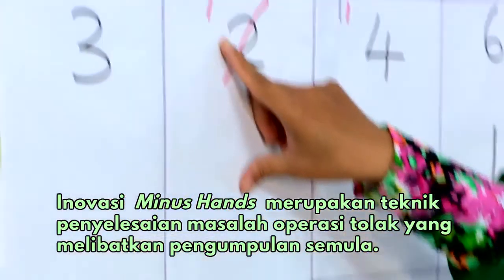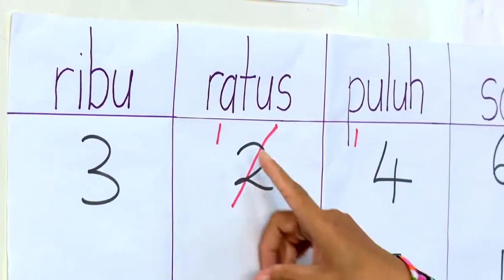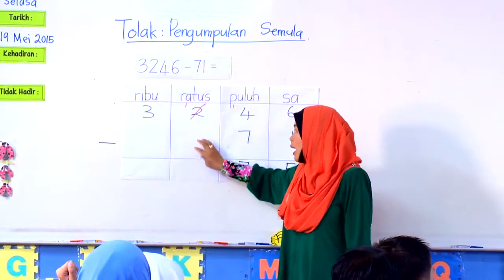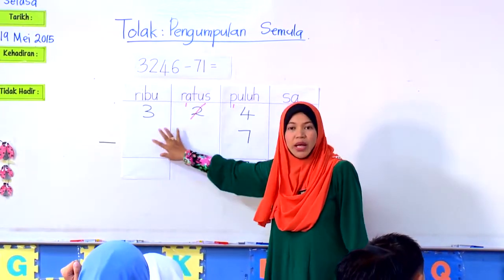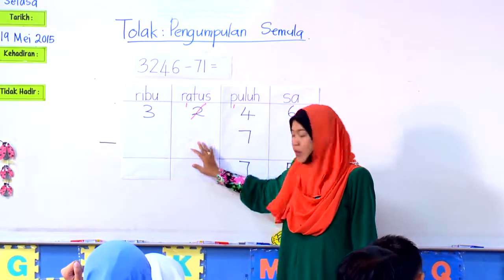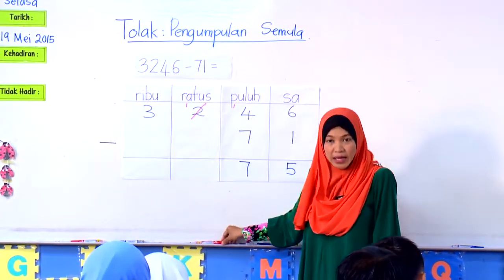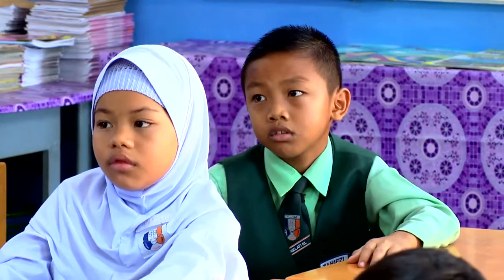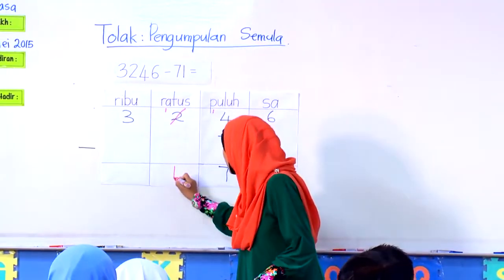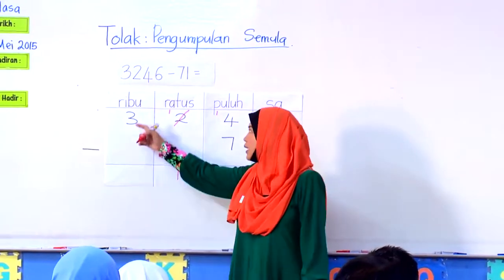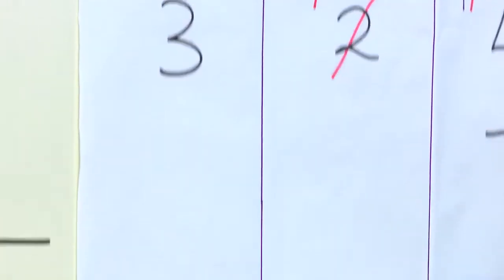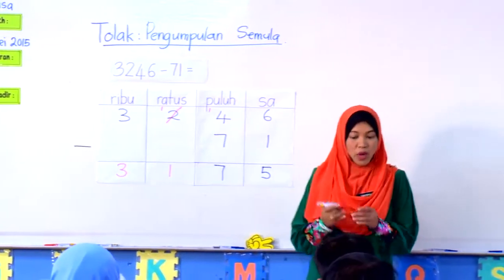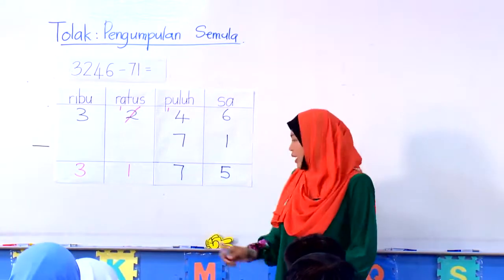Seterusnya, kita pergi kepada rumah ratus. Tadi kita dah pinjam 1, maka tinggal 1. Ada nomborkah yang perlu kita tolak di bawah ini? Tak ada. Jika tak ada, maka apa yang kita perlu buat? Salin sahaja — iaitu 1 dan yang 1,000? 3. Salin seperti biasa. Boleh? Boleh.